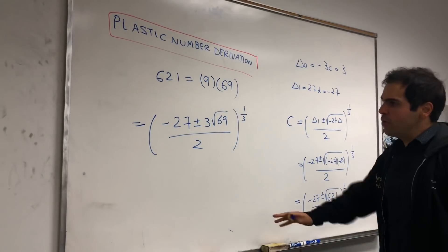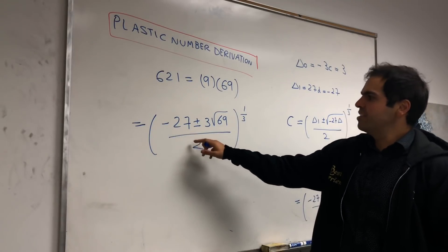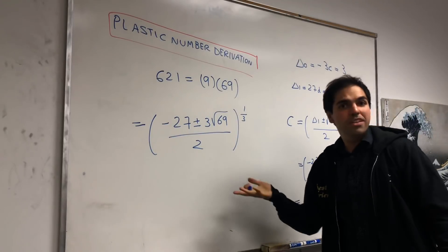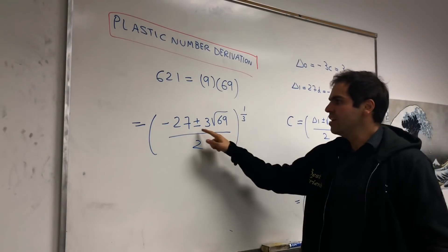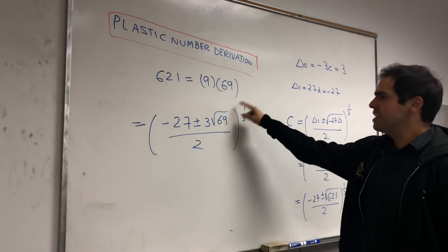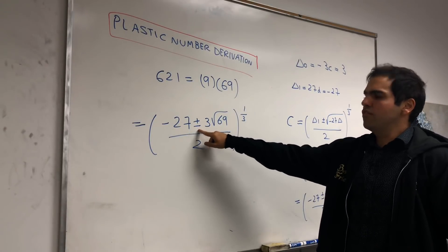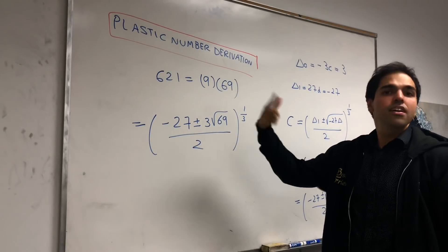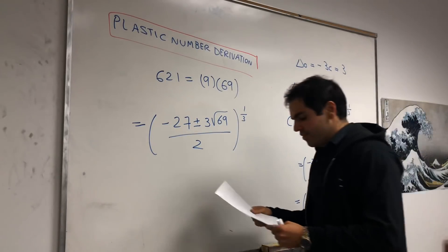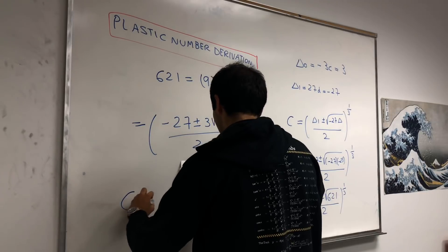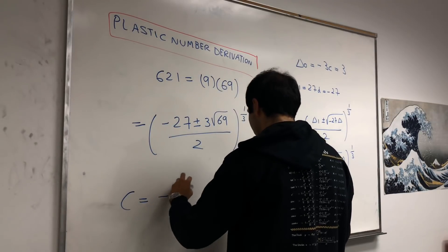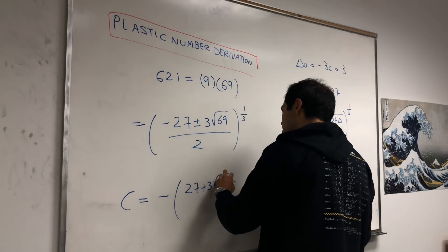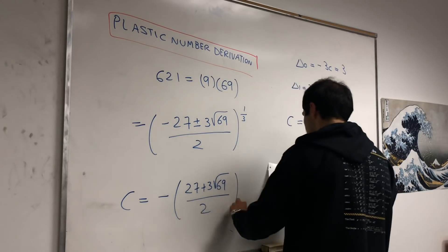It turns out, because, so notice, this says minus 27, either plus or with minus. It turns out, because we want the real solution, we have to take the C that is strictly negative. And it turns out, if you put the minus one, if you choose the minus, then you do get a strictly negative number. So, in this case, C will be minus that. So, minus 27 plus 3 square root of 69 over 2 cube root.